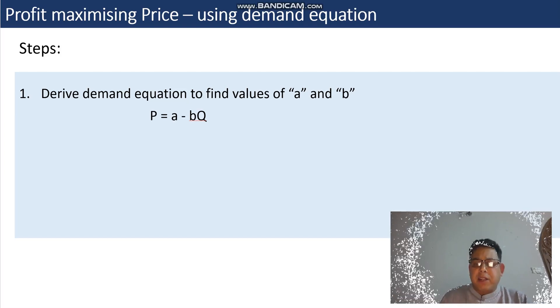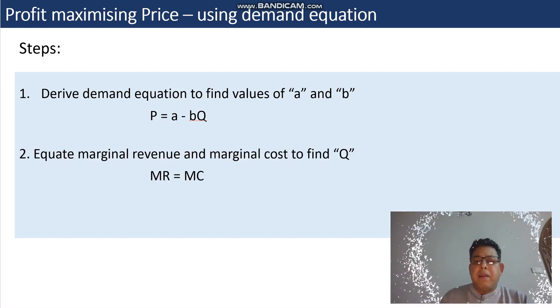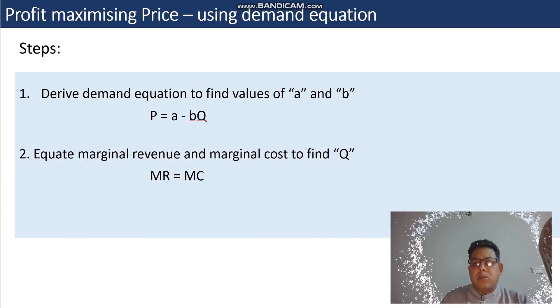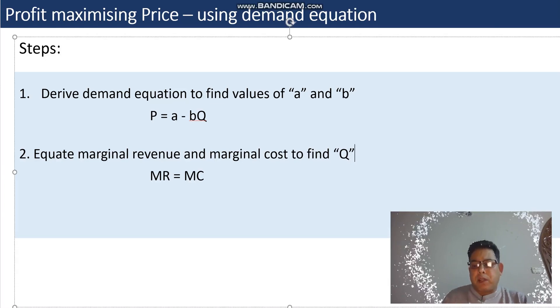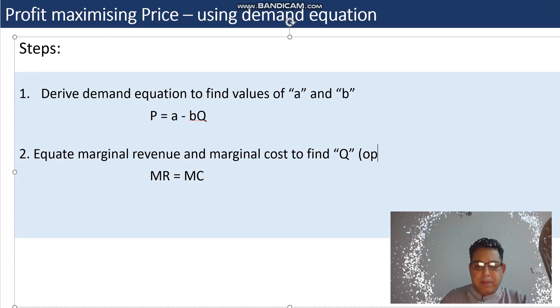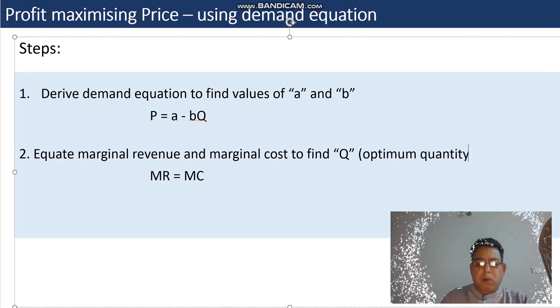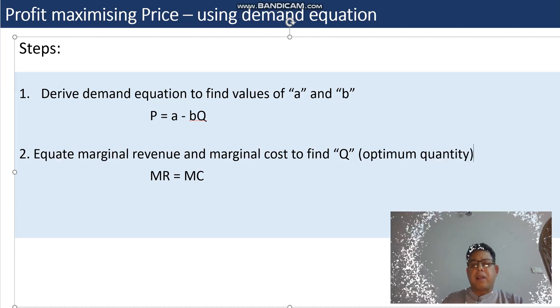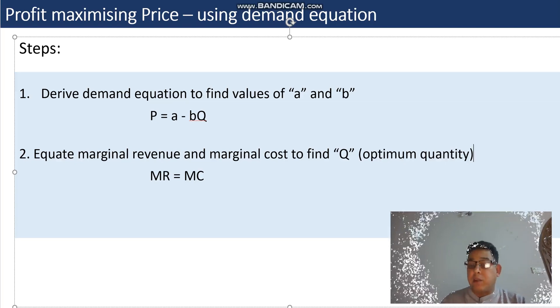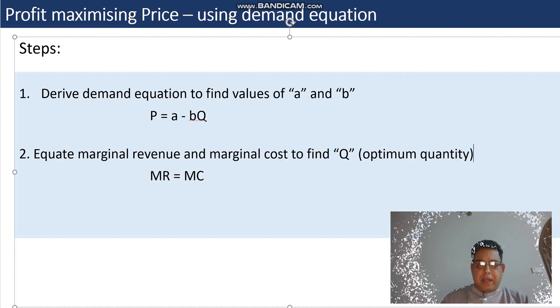Once we have derived the demand equation and we know the values of a and b, then we will equate marginal revenue and marginal cost to find the quantity. This is the optimum quantity - the profit maximizing quantity.